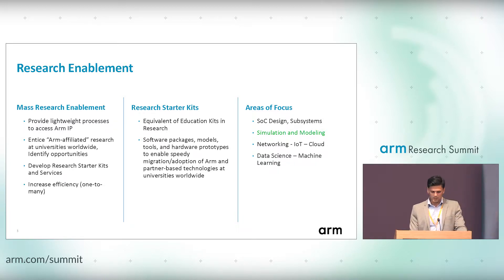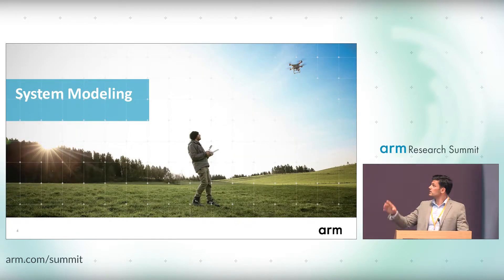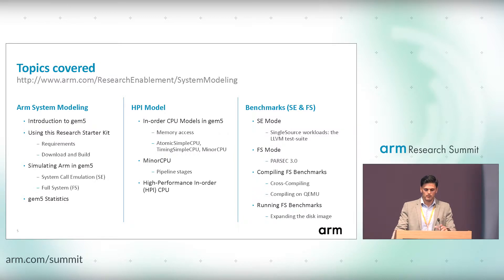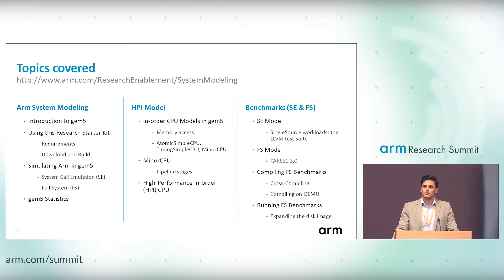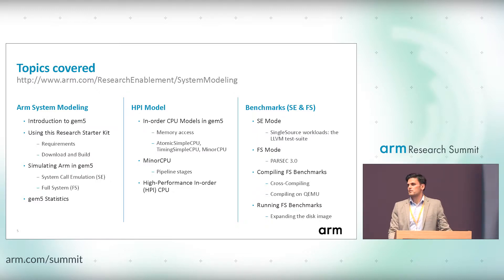So what is our starter kit on system modeling? You can go to arm.com/research-enablement, which introduces our research enablement activities, and then slash system-modeling. What we cover is: first, an introduction to gem5, and then in the document we tell you how to use research strategies, what the system requirements are, and how to download and build gem5 along with supporting materials. We cover simulating ARM in gem5, including both functional models, system emulation, and full system. We also cover gem5 statistics — how to read and analyze them.